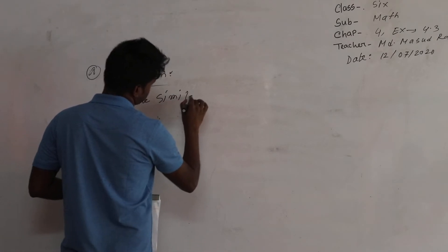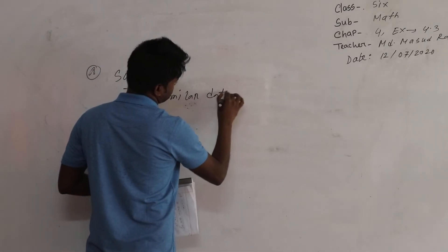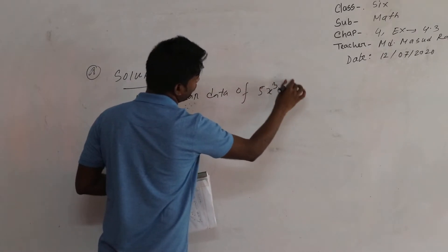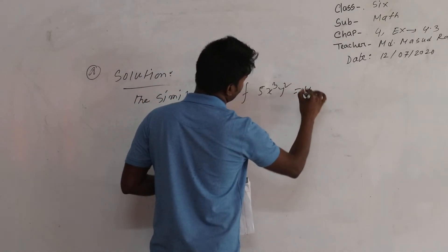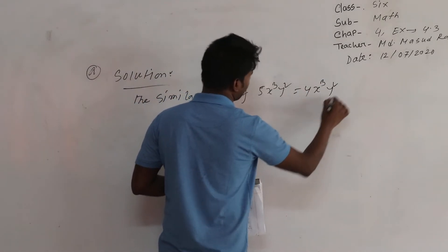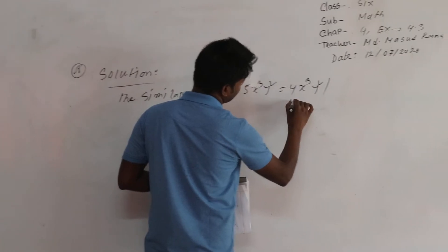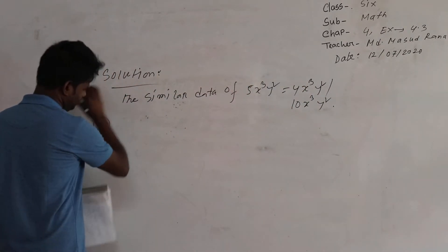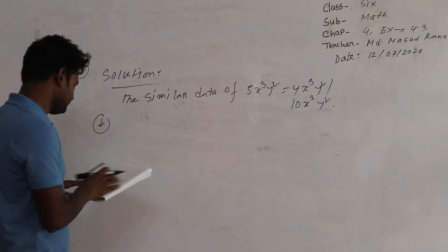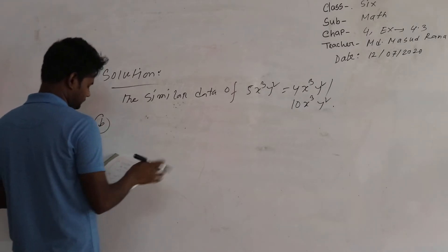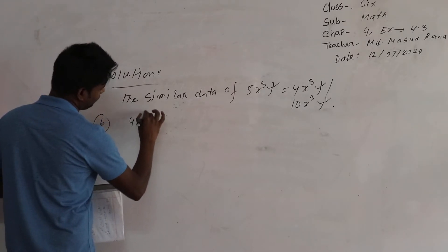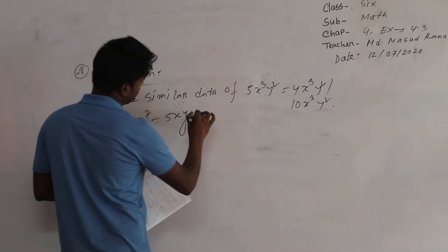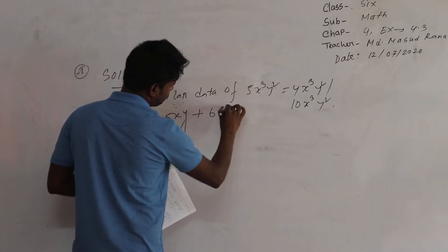Question A — solution: The similar terms of 5X³Y² are 4X³Y² or 10X³Y², since they share the same variables with the same exponents.